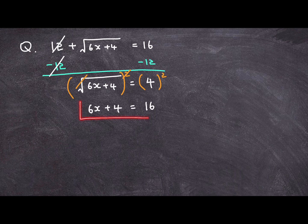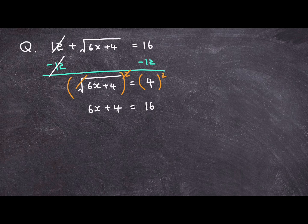Now we have a much simpler form of equation that says 6x plus 4 is 16. So let's further isolate this x by removing this integer term of plus 4 from the left side of the equation.